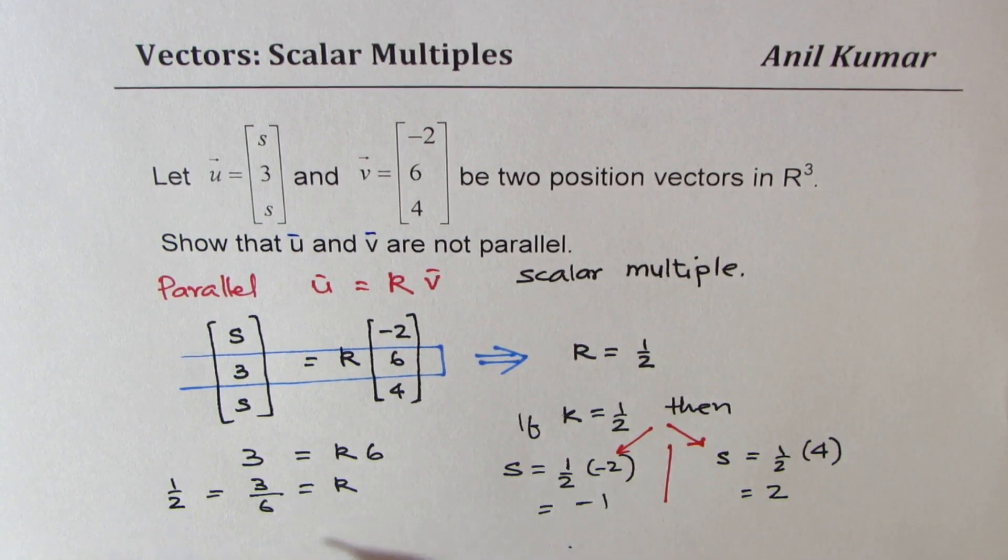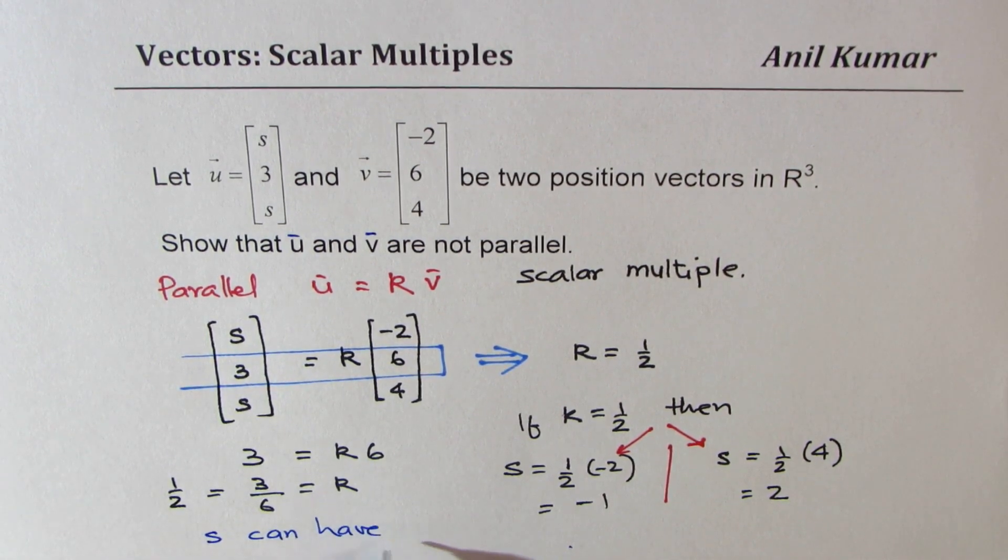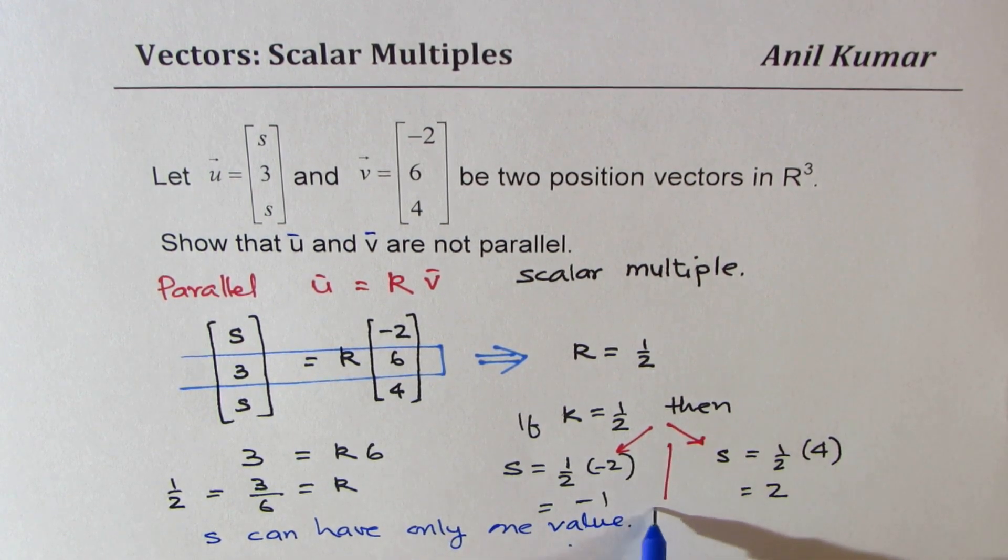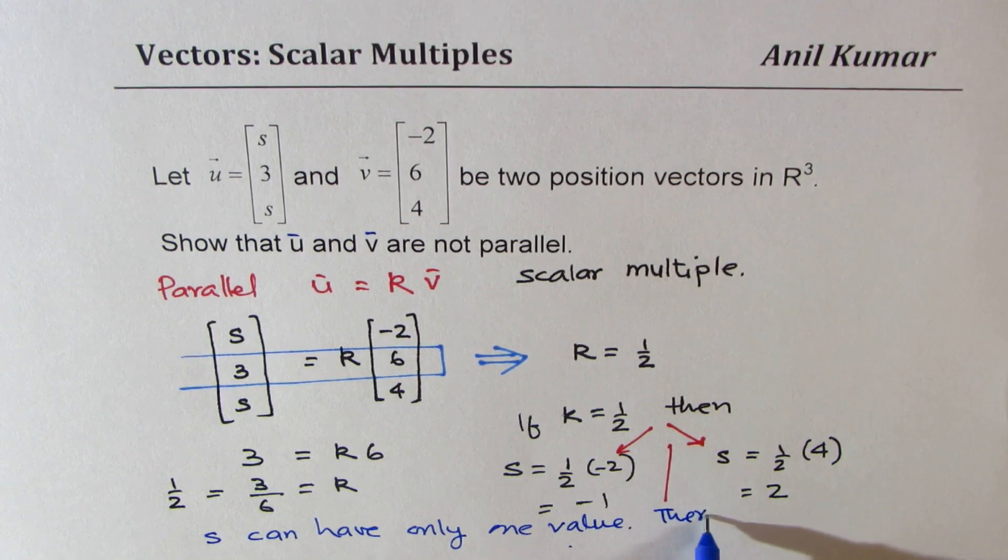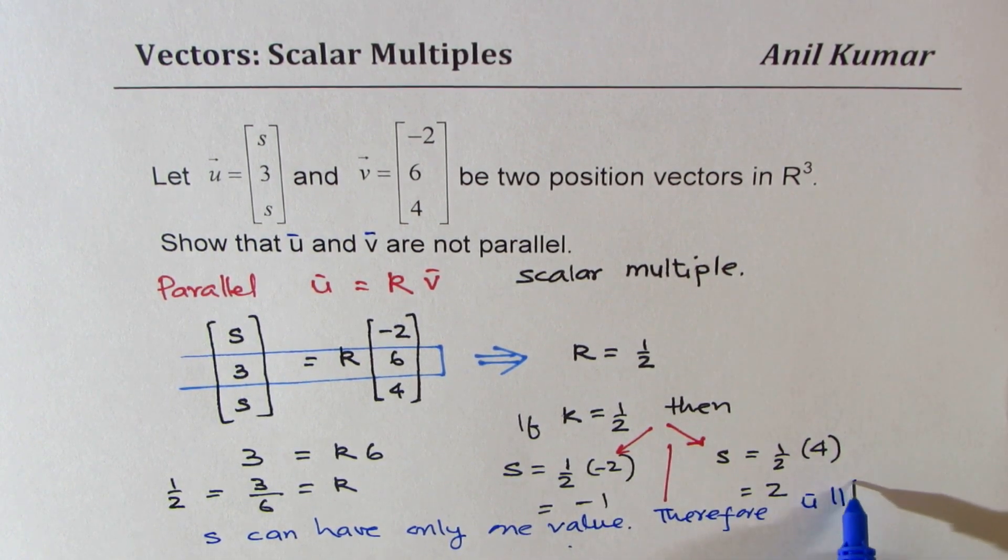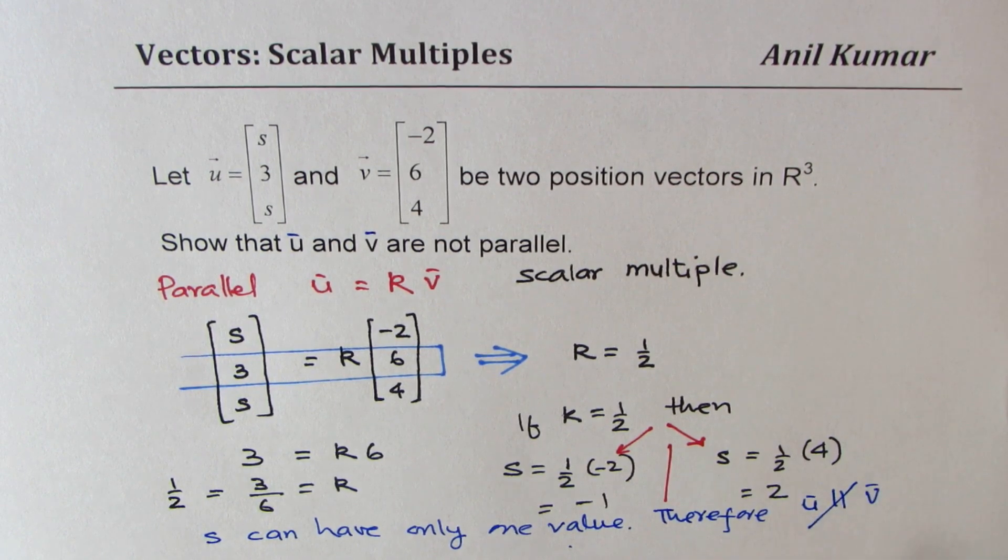So what we get here is two different values of s. Now that is not possible. So s can have only one value. Therefore u is not parallel to vector v.